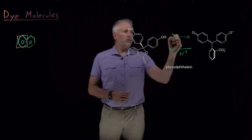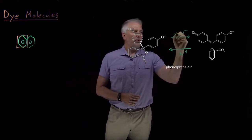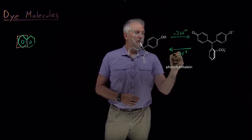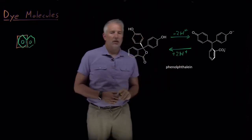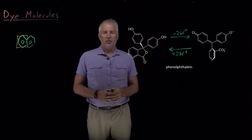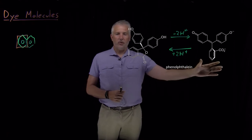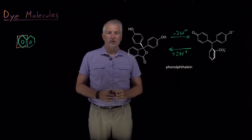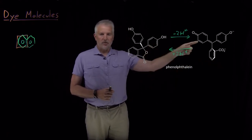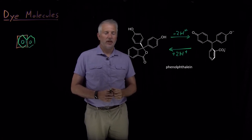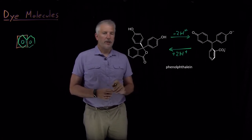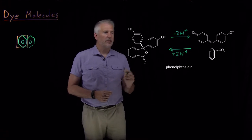If we remove those protons, typically two protons as you do when you titrate with hydroxide for example, you can form this more basic form of the molecule. The molecules have distinct structures in their acidic and basic forms. What's interesting from the point of view of the particle in a box is...